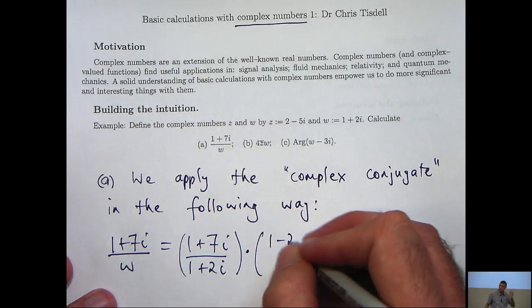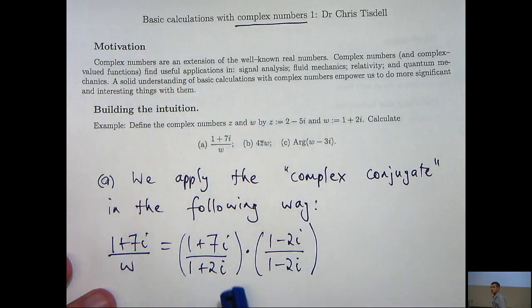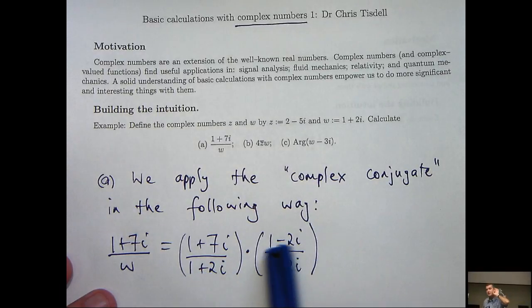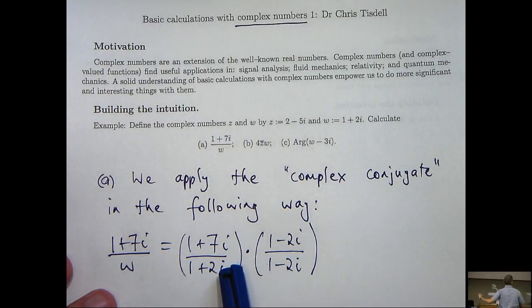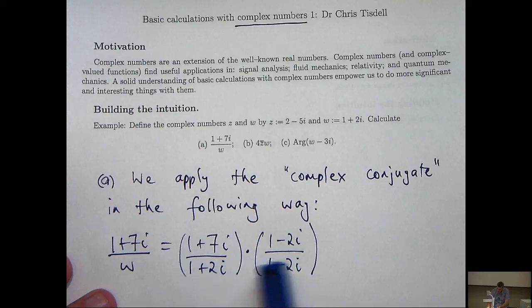Now I can do that by multiplying the top and the bottom by the complex conjugate of the denominator. So note the complex conjugate is almost the same as this but the sign has been changed for the coefficient of i. So instead of positive 2i it is negative 2i.